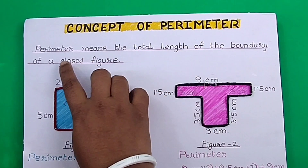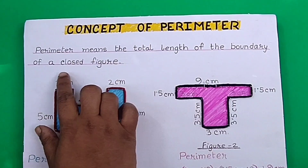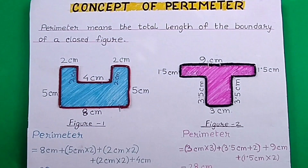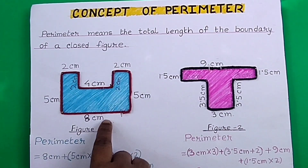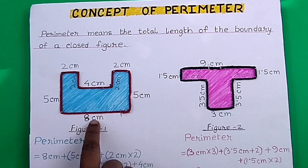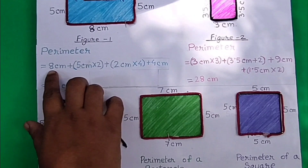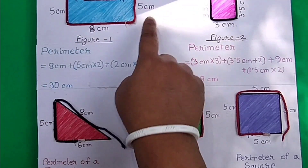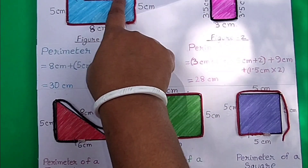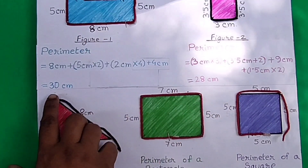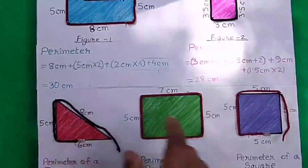The concept of perimeter: perimeter means the total length of the boundary of a closed figure. Two figures are shown here. Figure one has a total of eight sides which we add to find out the perimeter. One side is 8 centimeters, two sides are 5 centimeters, four sides are 2 centimeters, and one side is 4 centimeters. By adding the lengths of all sides, we get the perimeter, which is 30 centimeters.